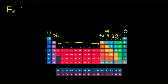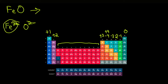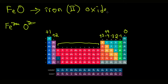Another example is FeO. Here Fe is two plus and O is two minus. You might expect subscripts of two and two, but they cancel out — four divided by two equals two, two divided by two equals one — so subscripts remain one and one. We still must indicate which iron: since it's Fe2+, the name is iron(II) oxide.